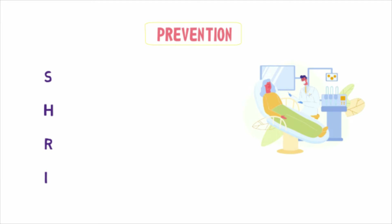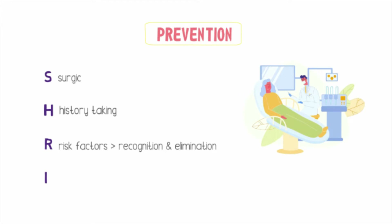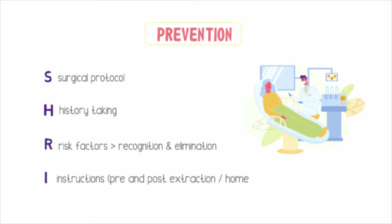For prevention and management, remember the four letters SHRI. First and most important: thorough history taking — both medical and dental history should be recorded to rule out risk factors. Second, surgical protocol: meticulous attention to proper planning, procedural details, sterilization, and surgical skills during extraction. Proper pre- and post-extraction instructions should be given — no smoking, no intense sneezing or coughing; maintain good oral hygiene by gentle tooth brushing and mouth rinsing. Supplemental written advice may also be given to ensure maximum compliance.